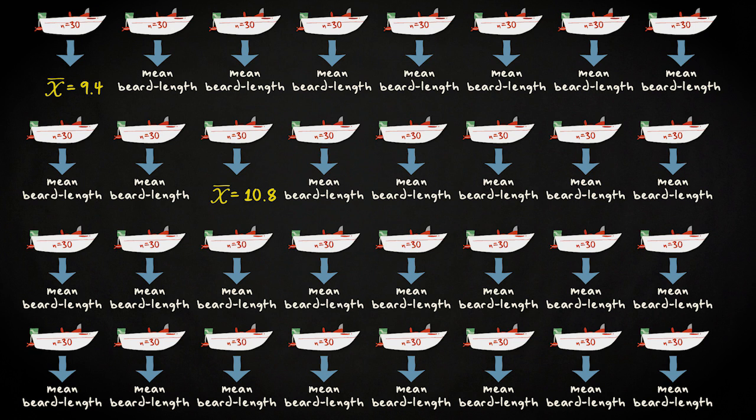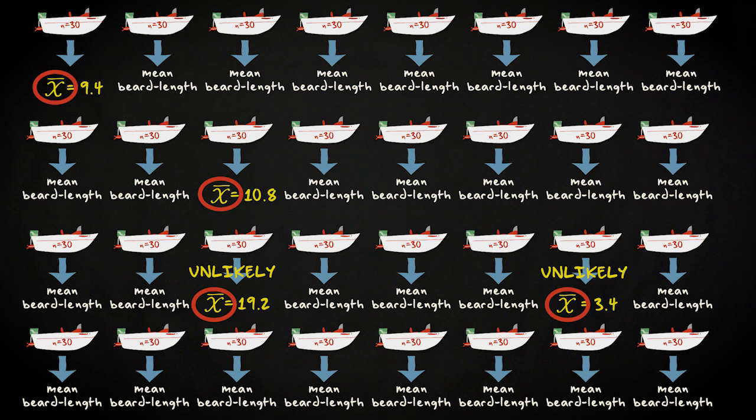However, it is very unlikely that you will encounter a boat with a mean beard length as low as 3.4 mm, or a boat with a mean beard length as high as 19.2 mm. Because these boat means could be seen as sample means, we symbolize them by x-bars.